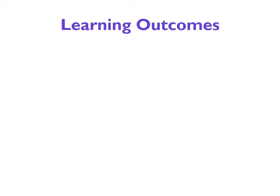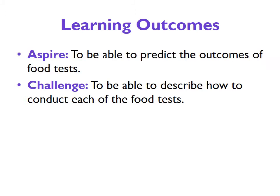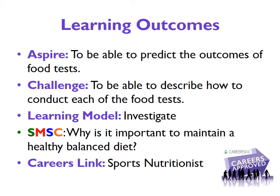The learning outcomes for today's lesson are as follows. Our challenge outcome is to be able to describe how to conduct each of the food tests. Our aspire is to predict the outcomes of the food tests. The learning model is to investigate, because we're looking at a required practical. Our SMSC is a moral one — thinking about why it's important to maintain a healthy, balanced diet. And our careers link is a sports nutritionist.